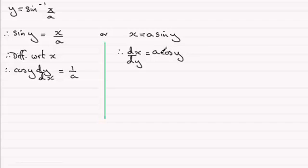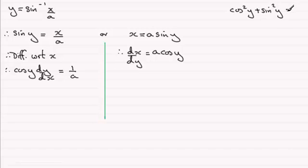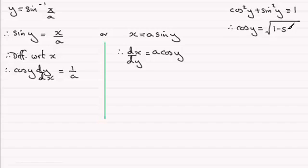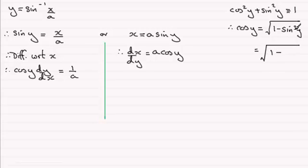Now in both methods we have cosine y, and we need to change that to a function of x. We do this using the identity that cos²y plus sin²y is identically equal to 1. Rearranging to make cosine y the subject gives cosine y equal to the square root of 1 minus sin²y. And we know that sine of y is x divided by a, so this becomes the square root of 1 minus (x/a) squared.